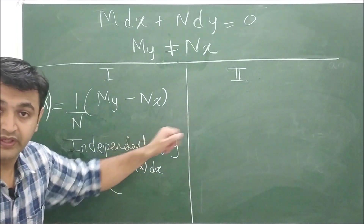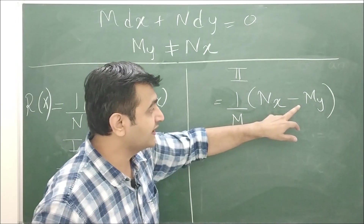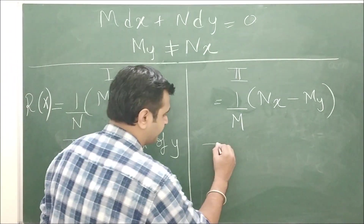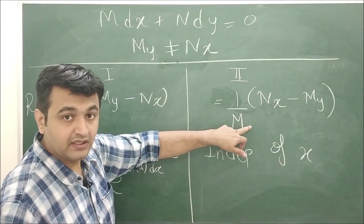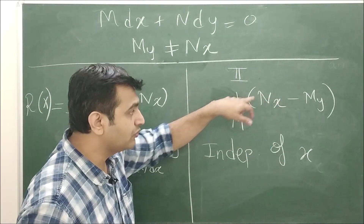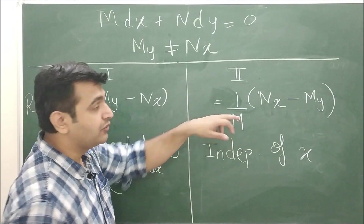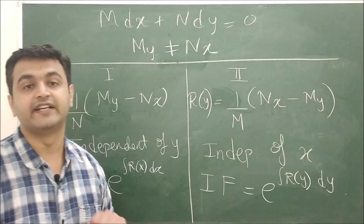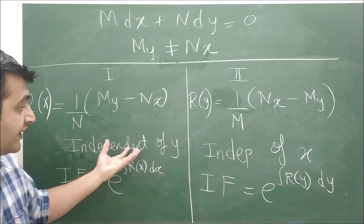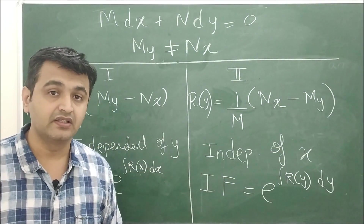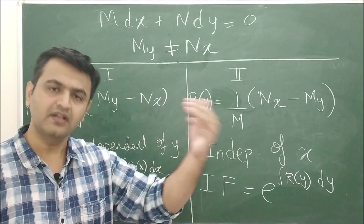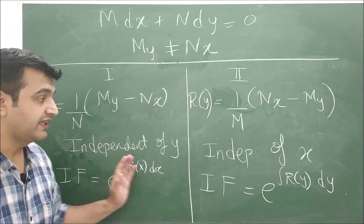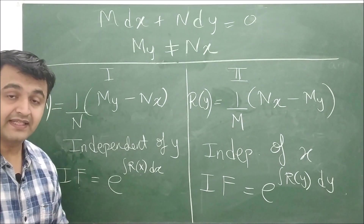If Method 1 gives a term containing y, it won't work, so go to Method 2: calculate (∂N/∂x − ∂M/∂y) divided by M. If this quantity is independent of x — containing only terms of y or constants — call it r(y), and the integrating factor is e raised to the integral of r(y) dy. If both quantities depend on both variables, we must look for another method.